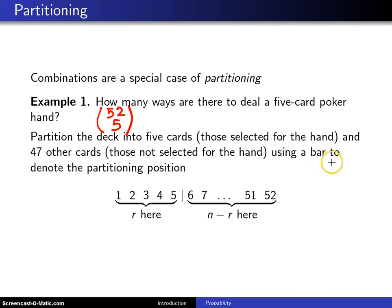And you use a bar to separate them, here is the bar, and here are the five cards. Now instead of calling them, you know, ace of clubs, two of diamonds, etc., I'll just call them one, two, three, four, and five.